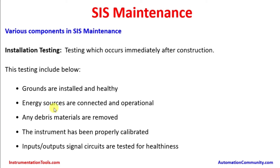The second requirement is that energy sources are connected and operational. During construction, multiple agencies are working — one contractor lays cables, another does terminations, another handles the switchgear side — so gaps can occur. These must be identified and cleared, ensuring all connections are done on both ends and continuity is checked. Also, any debris material must be removed from instrument tubing.